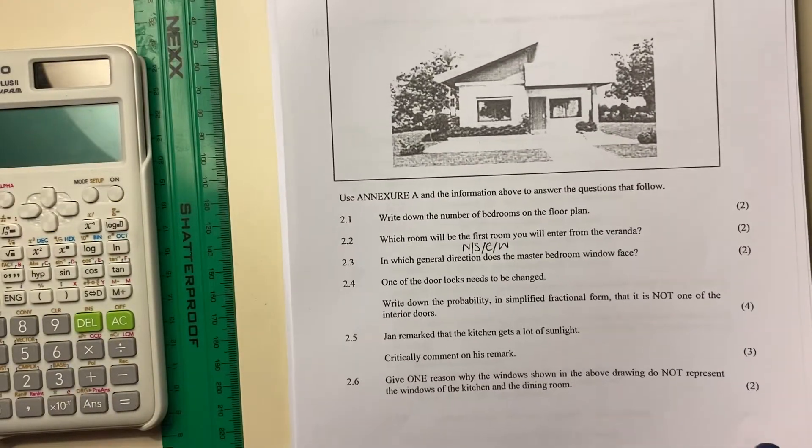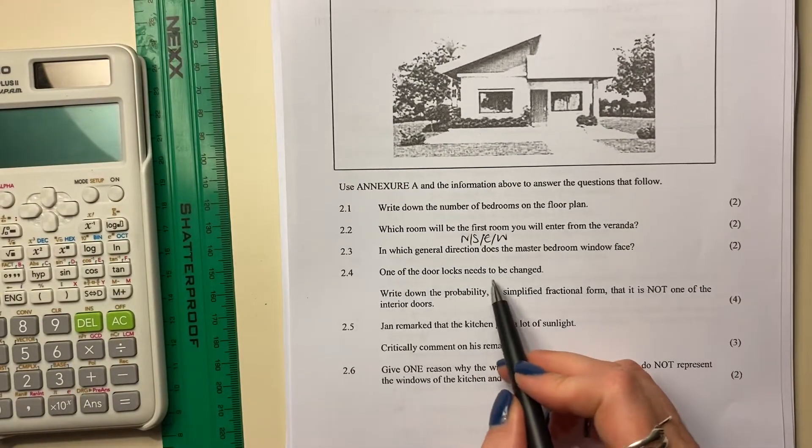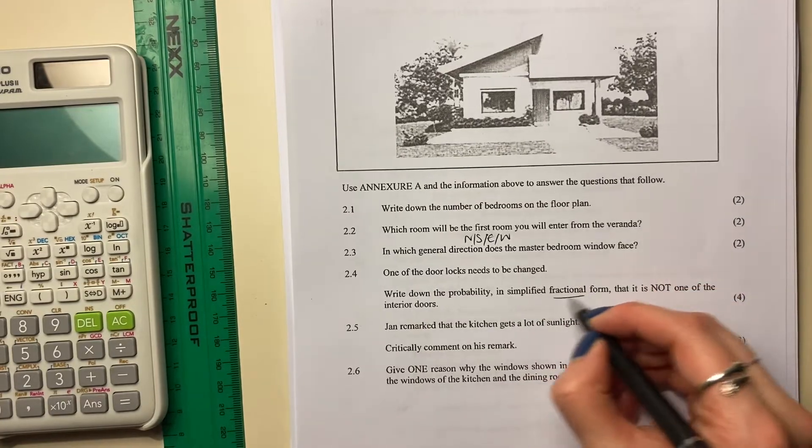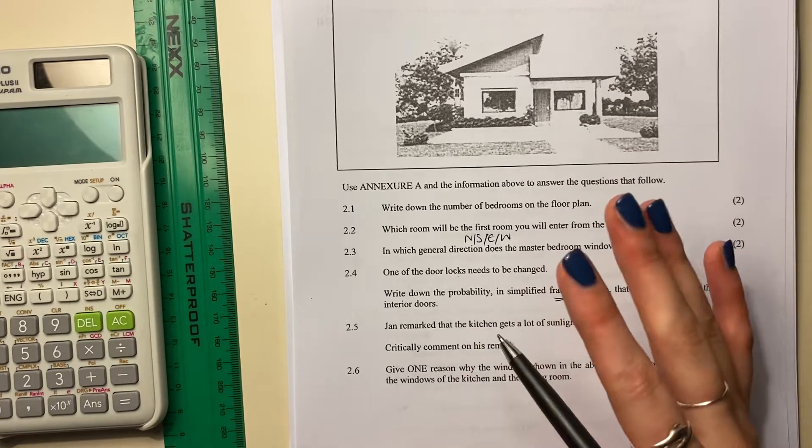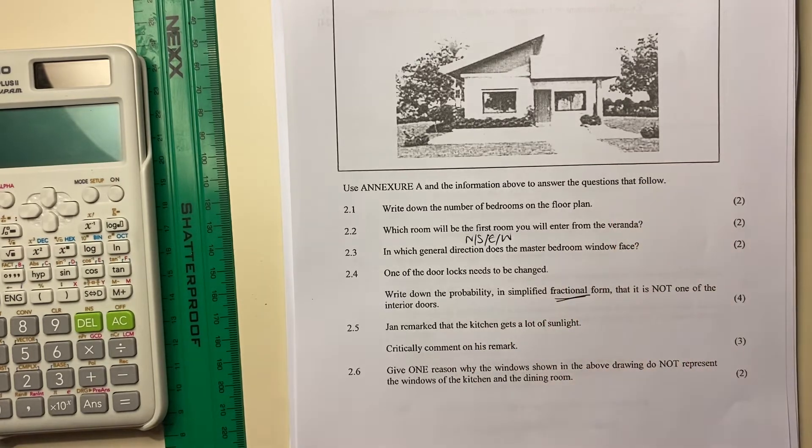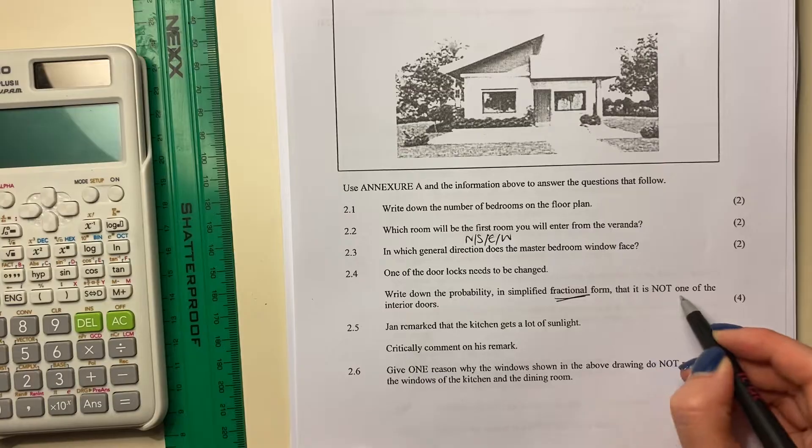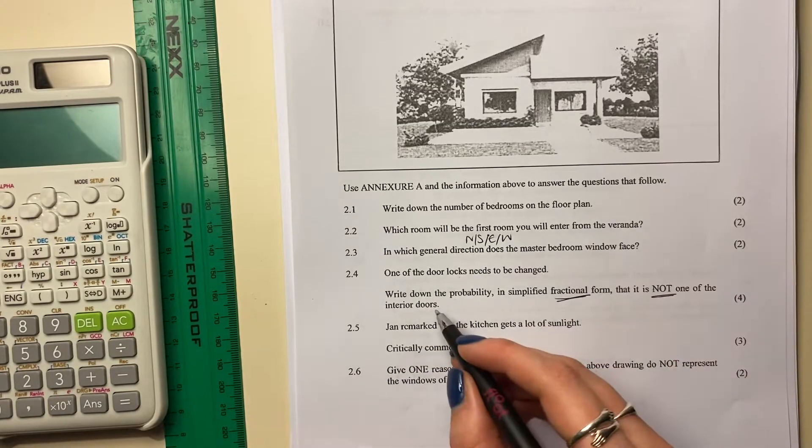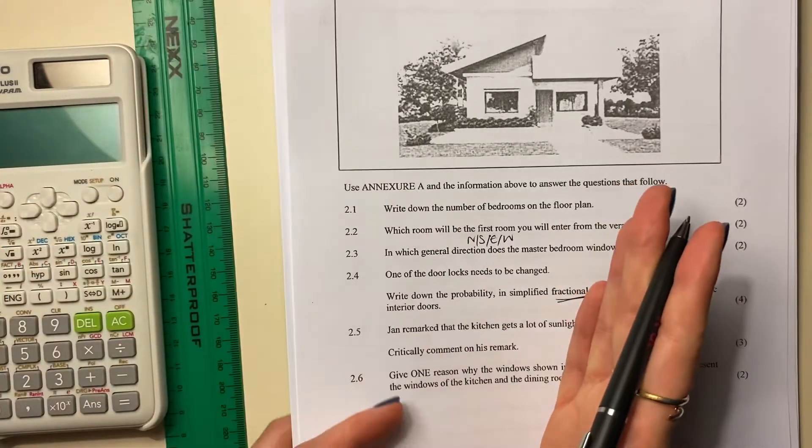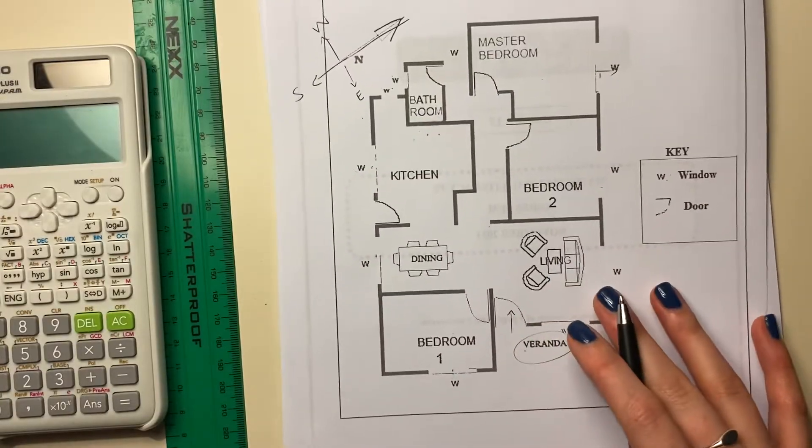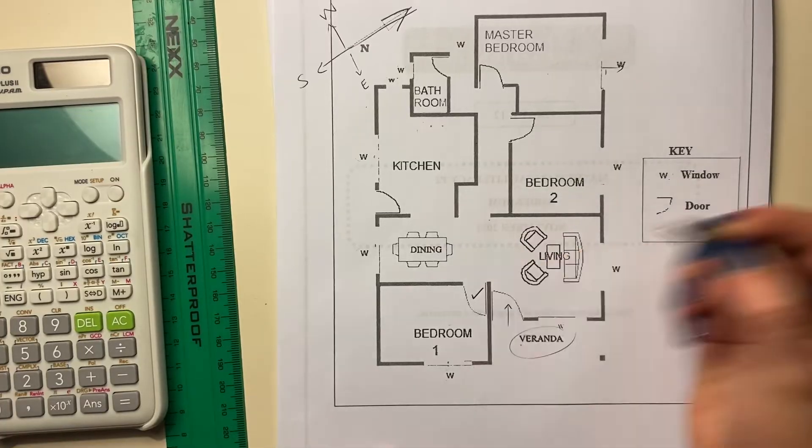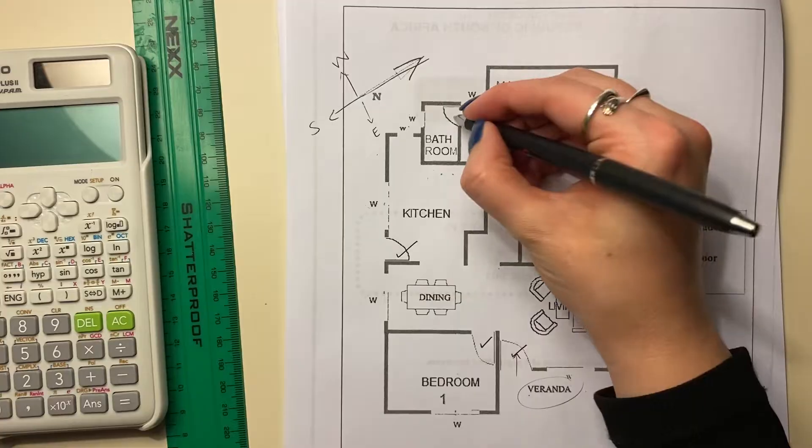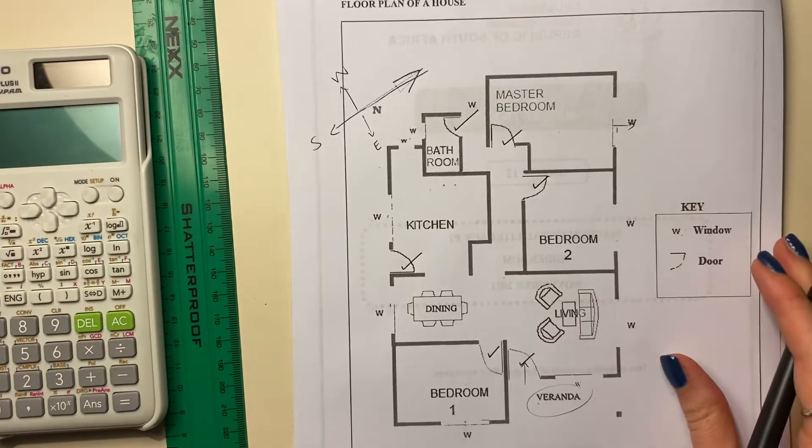And then move on to the next question. One of the door locks needs to be changed. Write down the probability in simplified fractional form - so not a decimal, not a percentage as a fraction - that is not one of the interior doors. So where are we going to start? We're first going to say, well, how many doors are there? So let's count them. So we have one, two, three, four, five, six. So there's six doors in total.